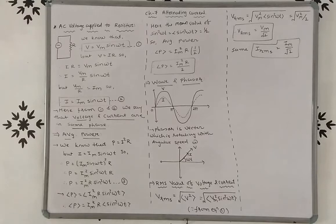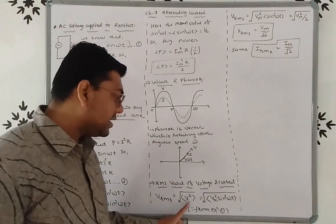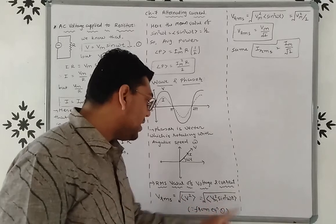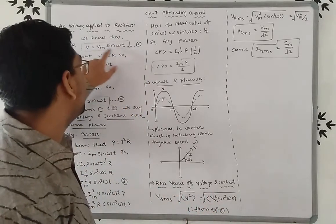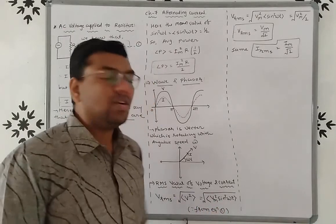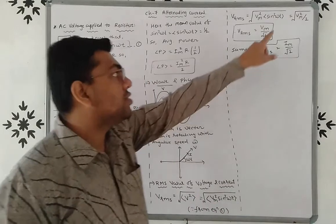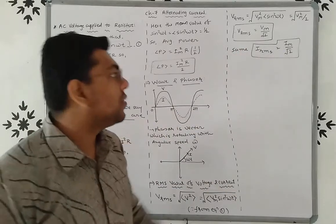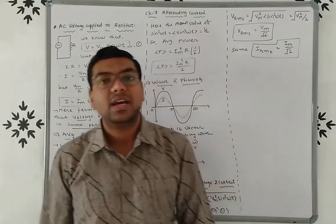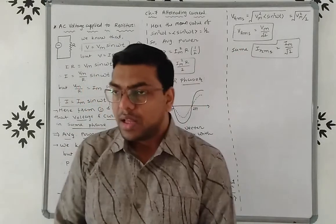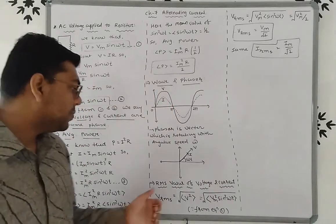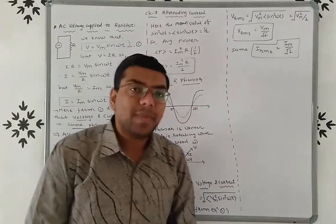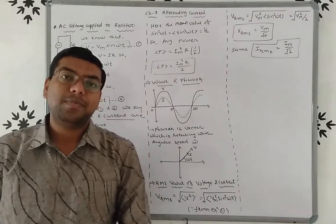Once again: to find the RMS value, we square the voltage, take the mean, then take the root. V² = Vm² sin² ωt; mean of sin² ωt = 1/2; so Vrms = Vm / √2. Similarly, Irms = Im / √2. The question: prove the equations Vrms = Vm / √2 and Irms = Im / √2.